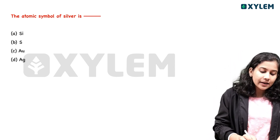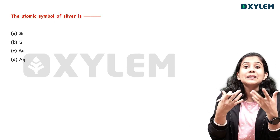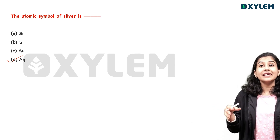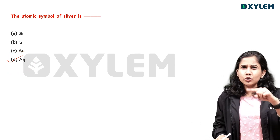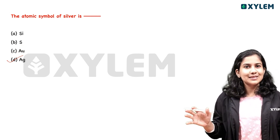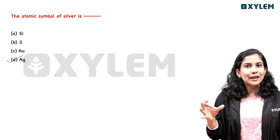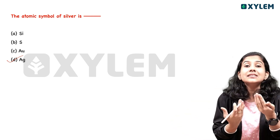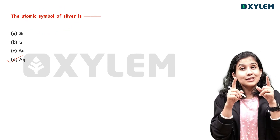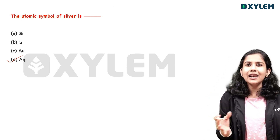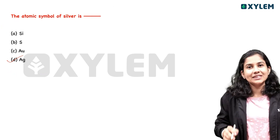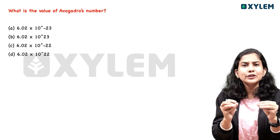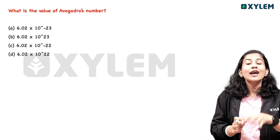We cannot use 'SI' as the symbol because silver is an English name. The symbol is derived from its Latin name. The symbol uses either the first letter or the first two letters of the Latin name — it is not simply taken from the English name. Miss already mentioned this in a previous video. We have learned about Avogadro's number: 6.022 × 10 raised to 23.